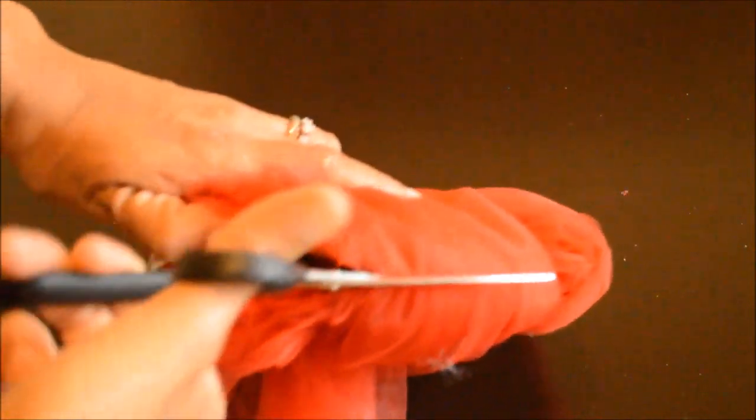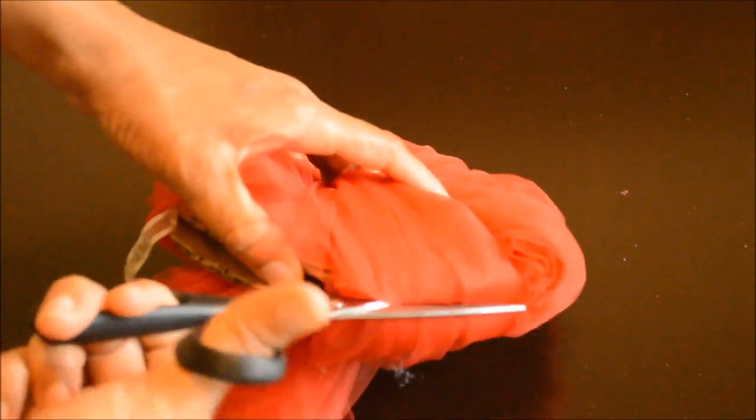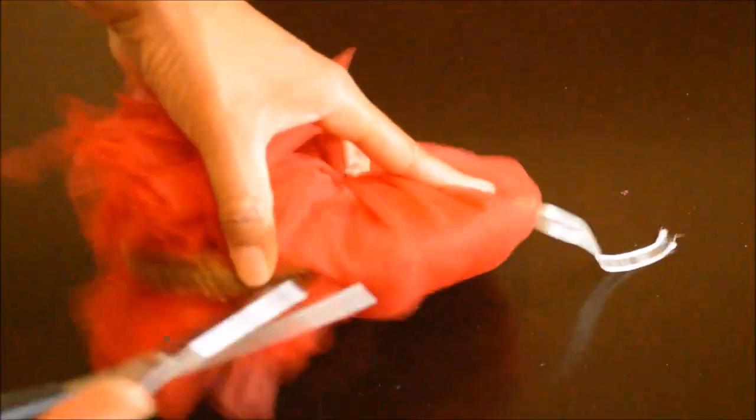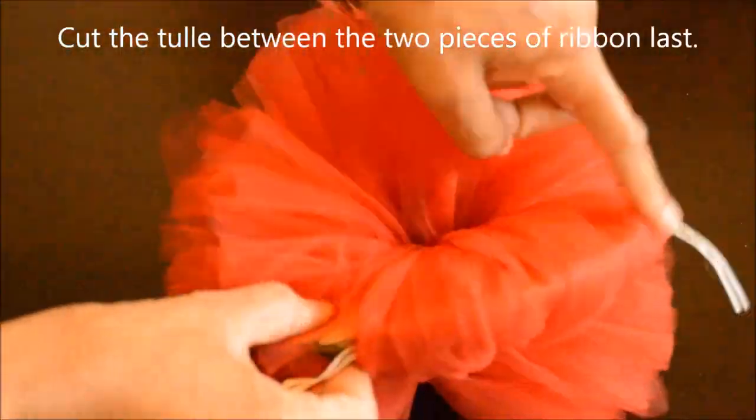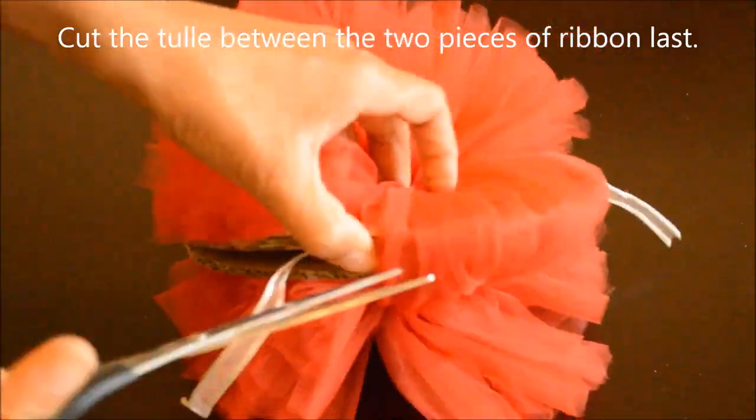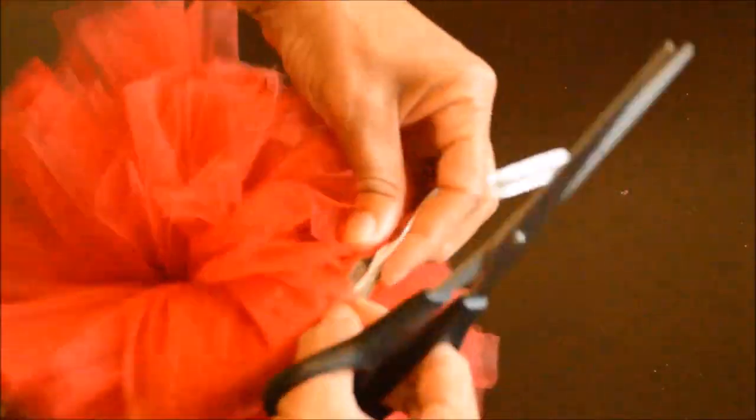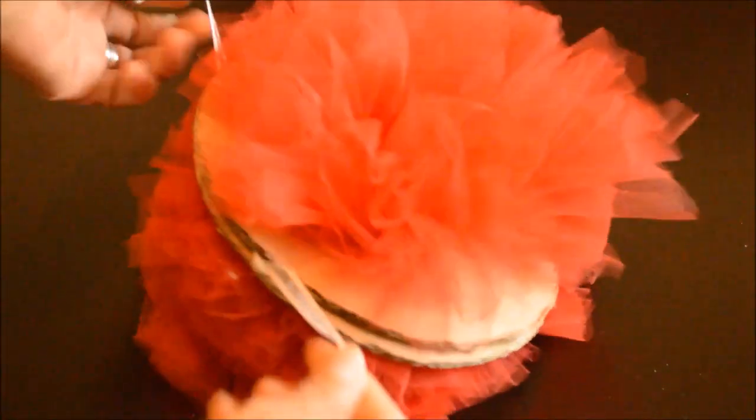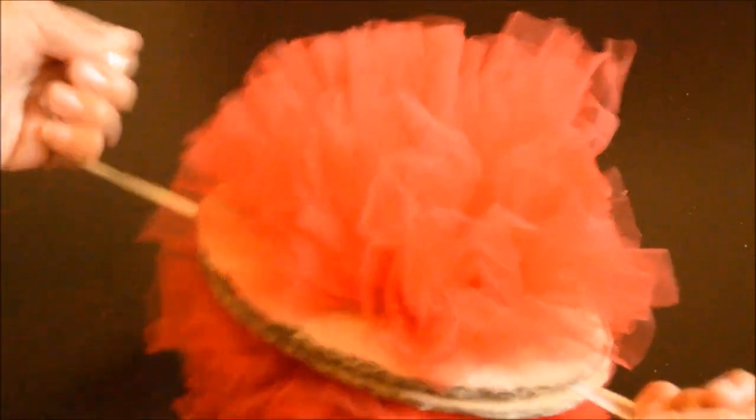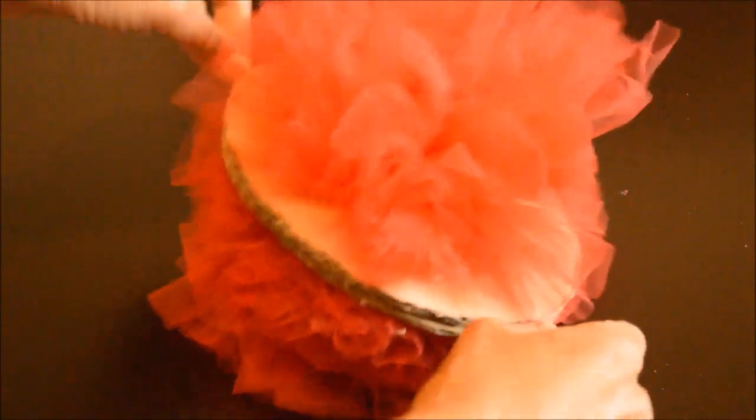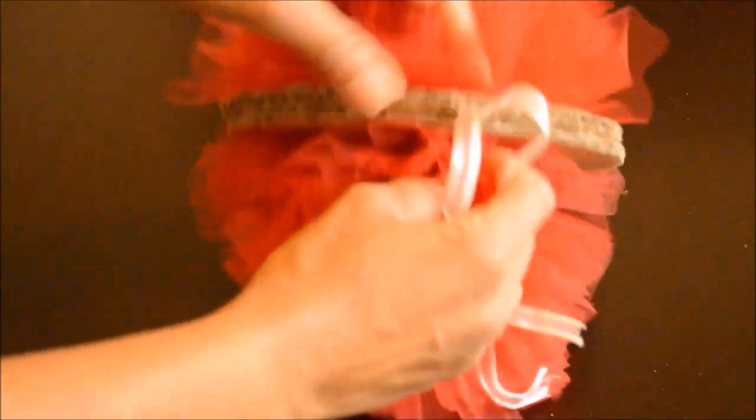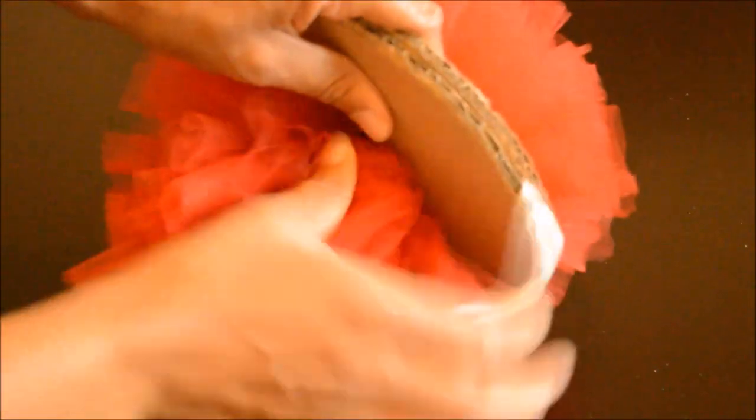Make sure to not cut your string because that's what's going to hold your pom-pom together in the middle. Next, you would grab the two pieces of string and pull them together in the center. It's easy to just go ahead and slide out the pom-pom.